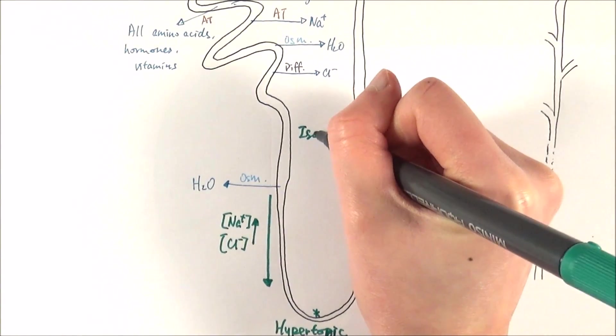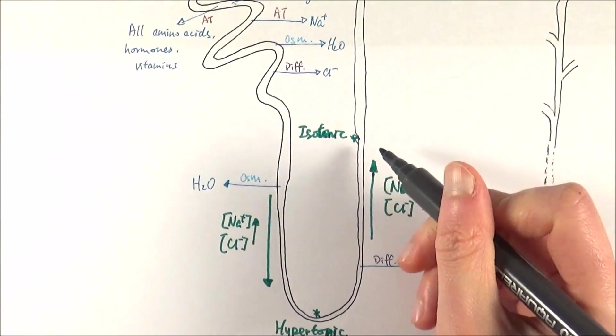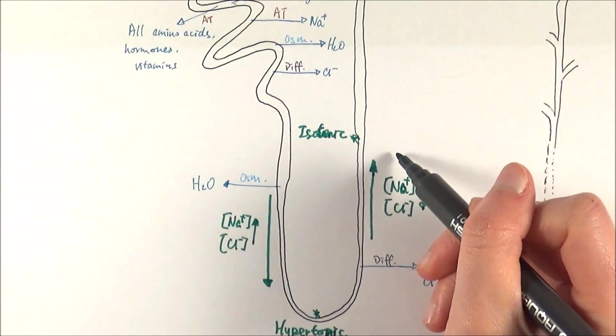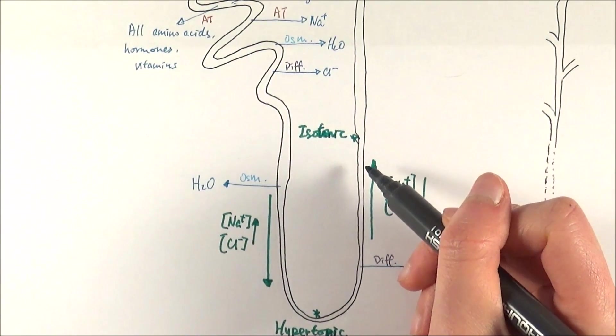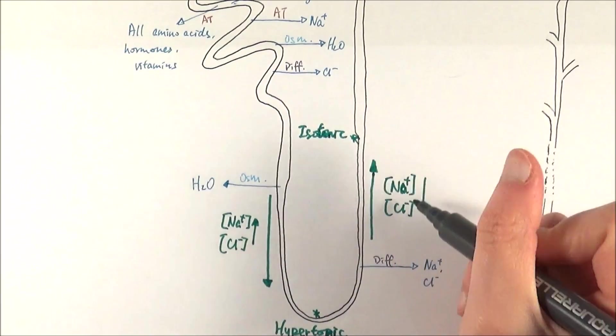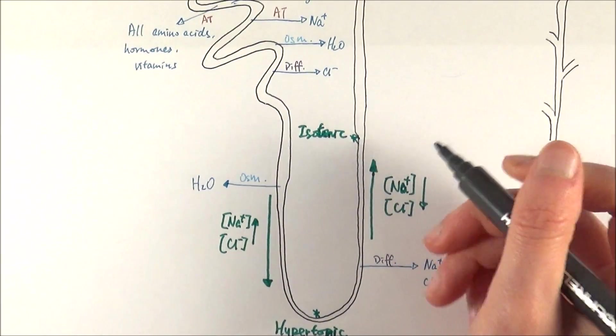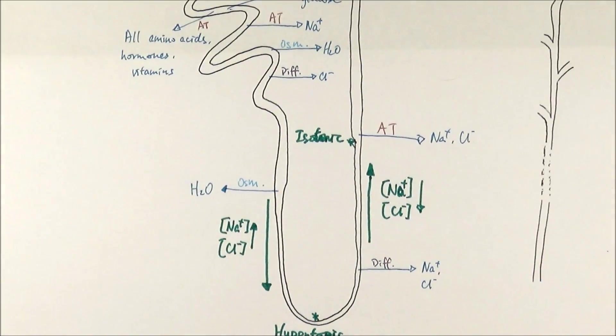What we mean by that is that the concentration of salt inside and out of the filtrate is pretty much the same. At that point, if we still want to get these things back, we need to do so by active transport. This is the guarantee that we get as many salts back as possible.